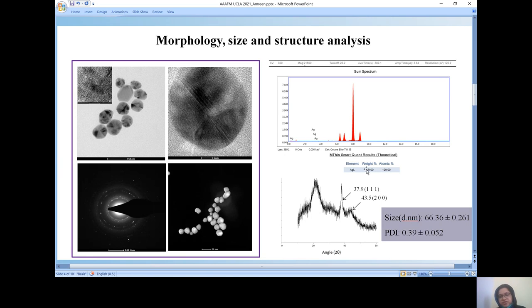Then further, the spectra also confirmed that these particles are of silver and the XRD stated the sharp peak to be of the crystalline nature. The dynamic light scattering index showed that the size to be nearly around 66 nanometers and the polydispersity index to be lower as 0.39.